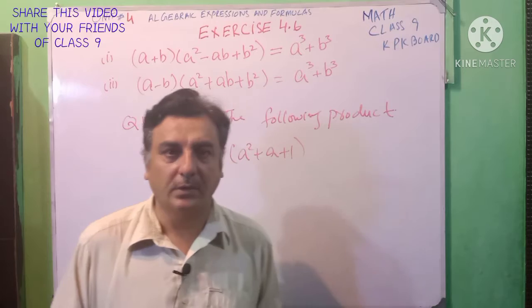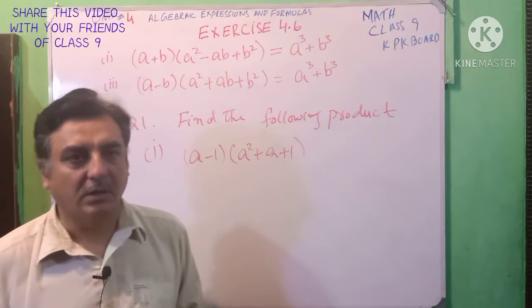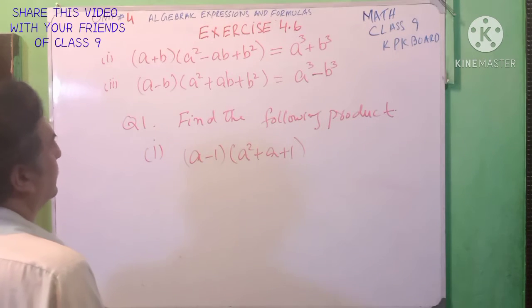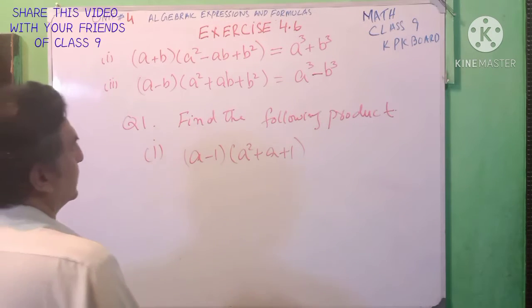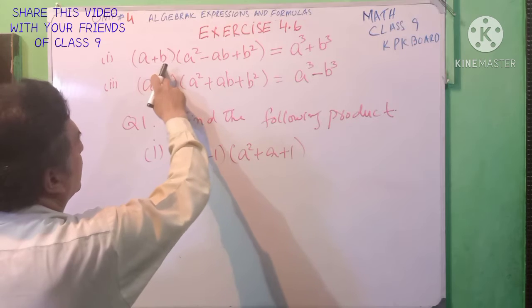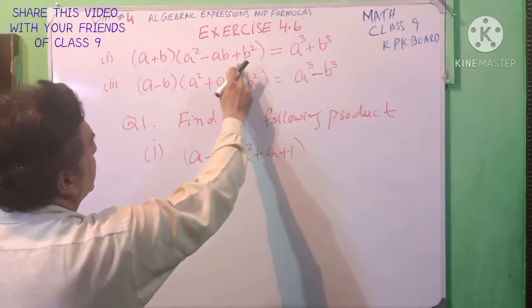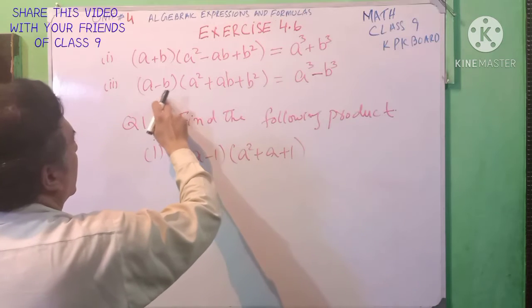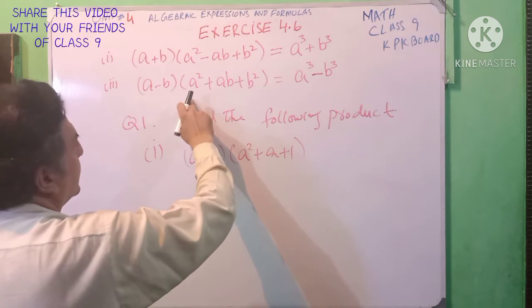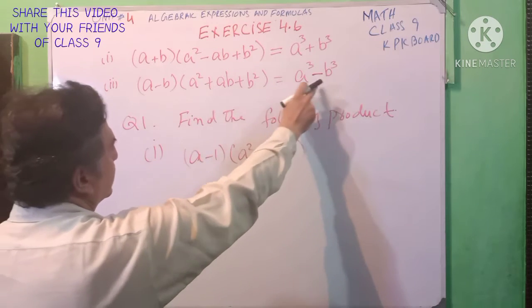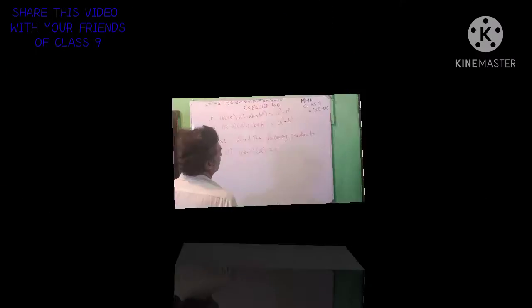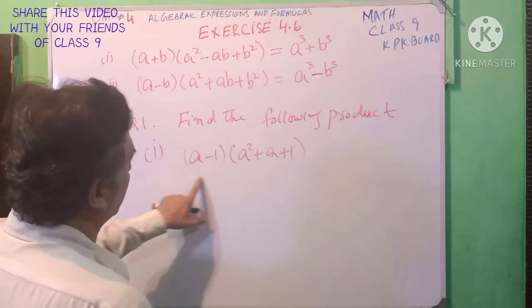Bismillah ar-Rahman ar-Rahim. Today we start Exercise 4.6. There are two formulas which we will use in this exercise. One is: (a+b)(a²-ab+b²) = a³+b³, and (a-b)(a²+ab+b²) = a³-b³. Find the following product.